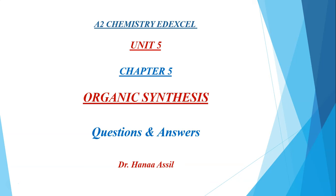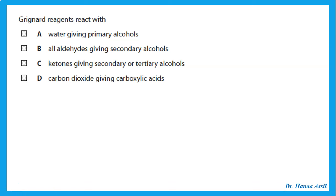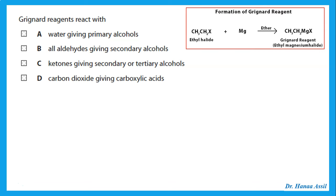Let's take a look at some questions of organic synthesis. One of the reagents we are required to use is the Grignard reagent. The Grignard reagent is formed from, for example, an alkyl halide and magnesium in the presence of ether, giving what we call the Grignard reagent — the ethyl magnesium halide.